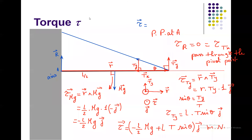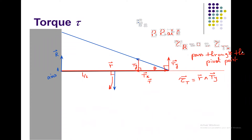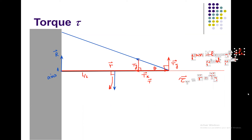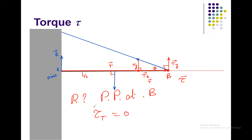We can also take the pivot point at point B. This is useful if we want to calculate the reaction R, since using pivot at A we don't get the reaction in our equation. With pivot at B, tau of T equals zero, and we can easily calculate tau of R and tau of mg. We'll do some applications later.